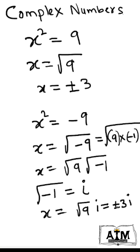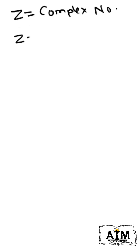Whenever you write i in a number system, that type of number is called a complex number. Plus or minus 3i is an example of a complex number. A complex number is denoted by z. For example, z equals 2 plus 3i, where 2 is called the real part of the complex number.